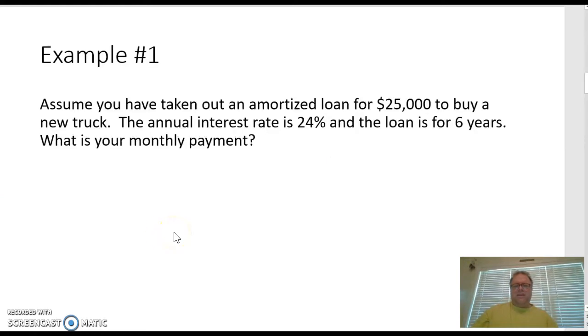Assume that you've taken out an amortized loan for $25,000 to buy a new truck. The annual interest rate is 24% and the loan is for six years. What is your monthly payment? That's a pretty common type of loan and amount. The 24% interest rate is pretty high. Normally it's going to be around 8 to 10% depending on your credit rating.